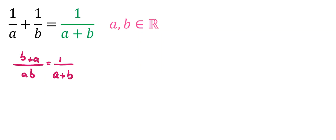Now, we cross-multiply. Cross-multiply means multiply these two things. These two things are equal. It means B plus A times A plus B equals AB times 1, which is AB.